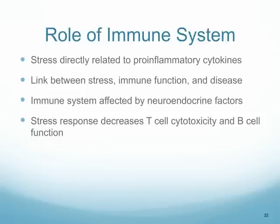The immune system is going to be directly affected by our stress response. There is a link that directly connects stress to immune function and then to disease. This doesn't mean that every time you break an arm you'll get cancer, but if we have a lot of psychological stress in our lives, that could decrease our immune function, leading to the development of disease later on. We will have decreases in T-cell cytotoxicity and B-cell function when we have stress.